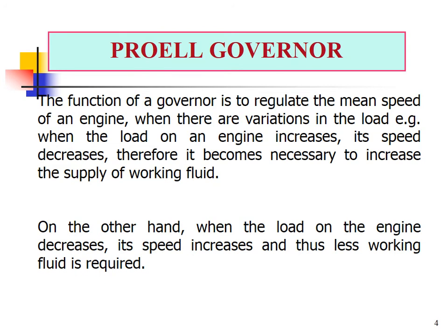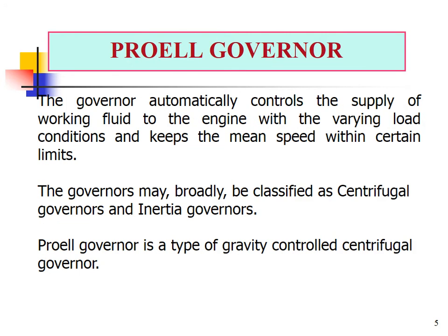The function of the governor is to regulate the mean speed of the engine when there are variations in load. When the load of the engine increases, speed decreases, so it is necessary to increase the supply of working fluid. Vice versa, when the load decreases, speed increases, so the supply of working fluid should be less. The governor automatically controls the supply of working fluid to the engine under varying load conditions to maintain speed within certain limits.